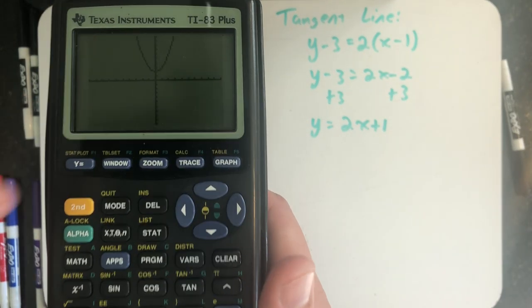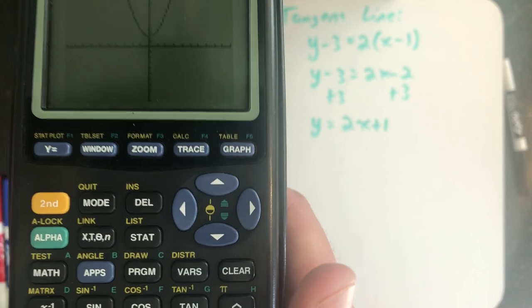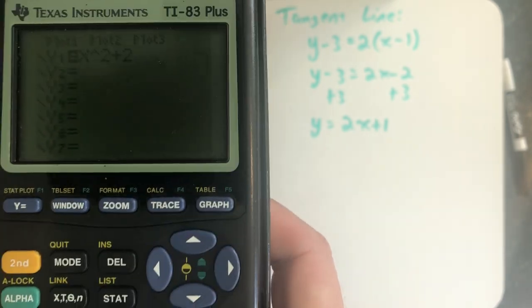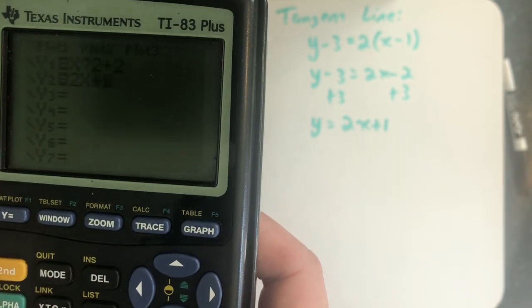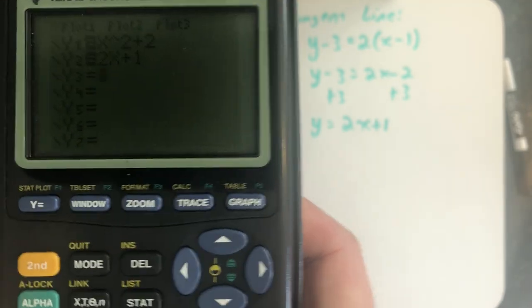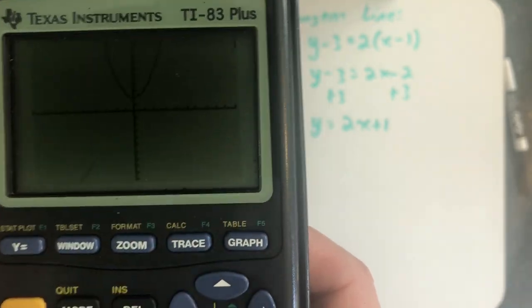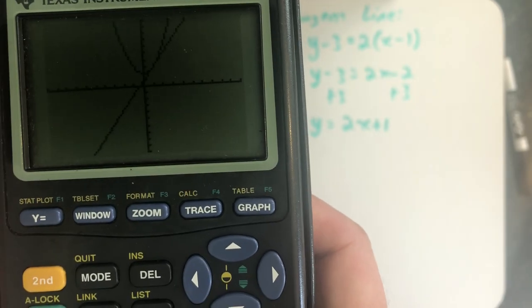I'm going to use my graphing calculator. I've already graphed y equals x squared plus 2 in my graphing calculator. Let's just add in the graph of y equals 2x plus 1. Hit the graph button, and there I see the two graphs together.